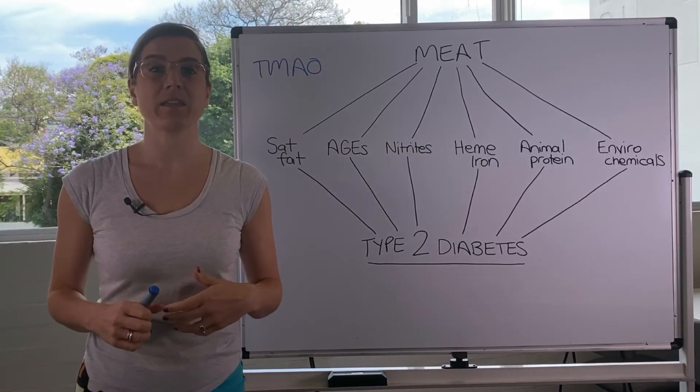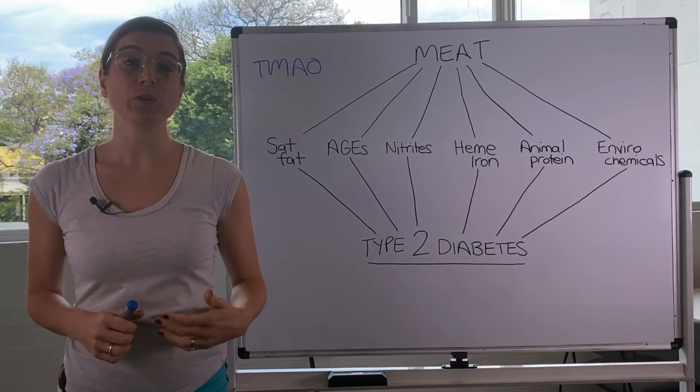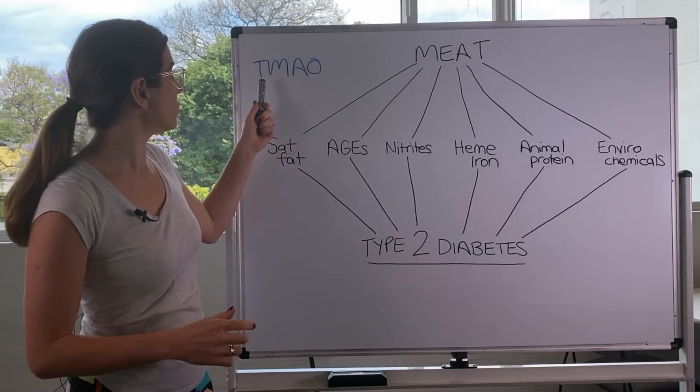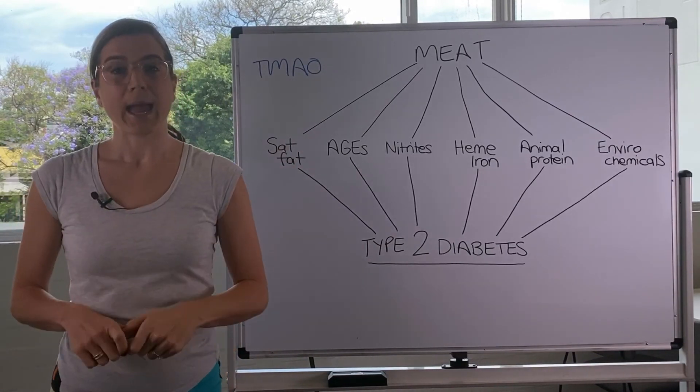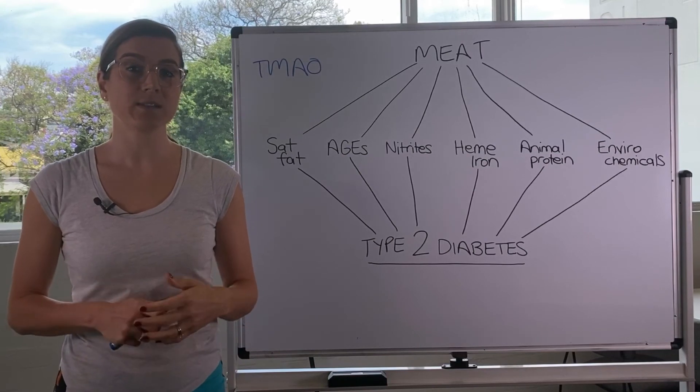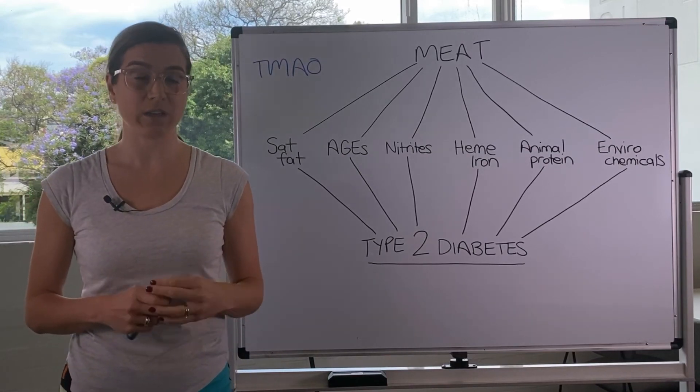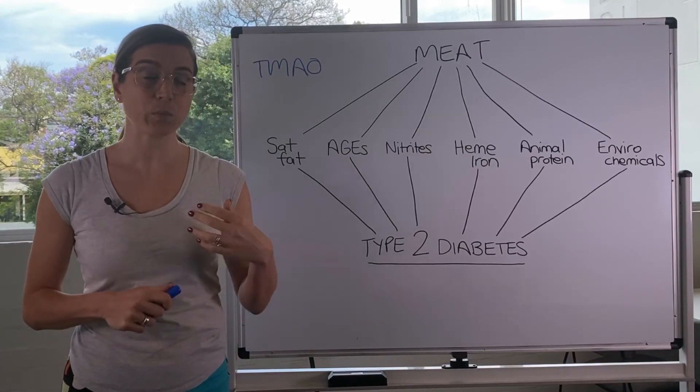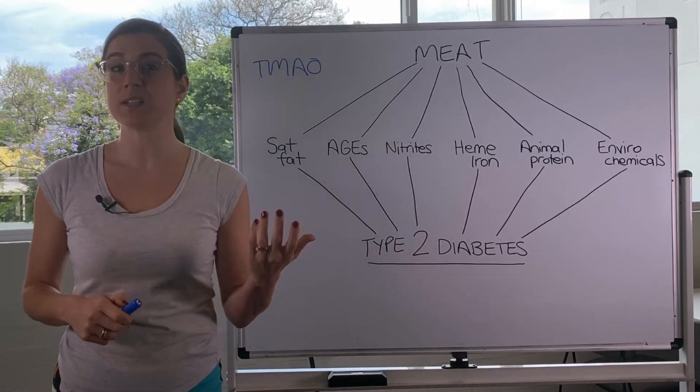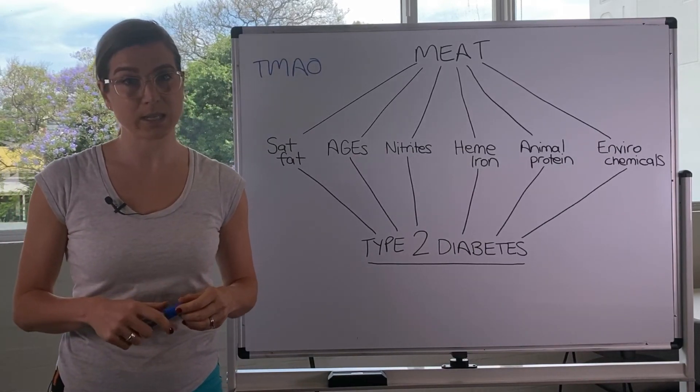And TMAO then goes to your liver and your liver will metabolize it into TMAO. And TMAO is now considered a marker of cardiovascular disease because people with high levels of TMAO have almost double the risk of cardiovascular disease.